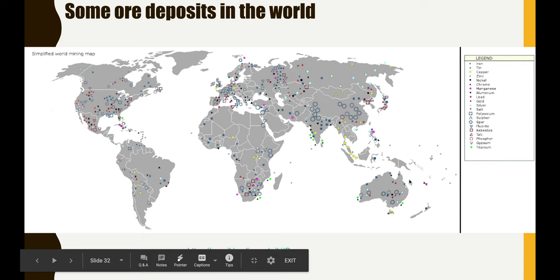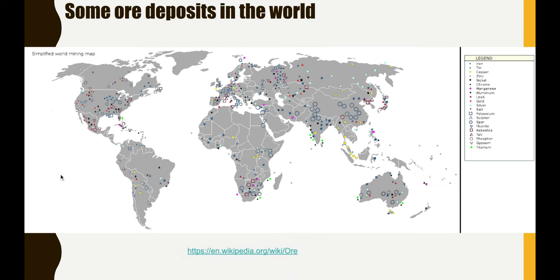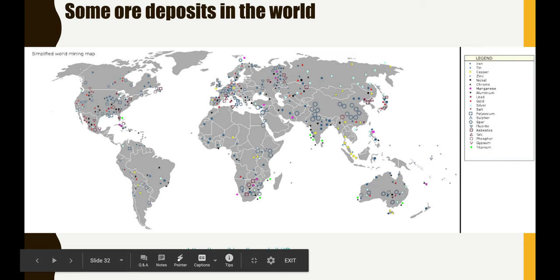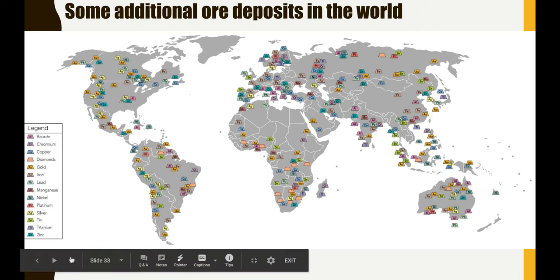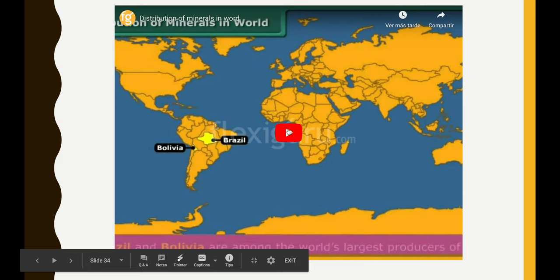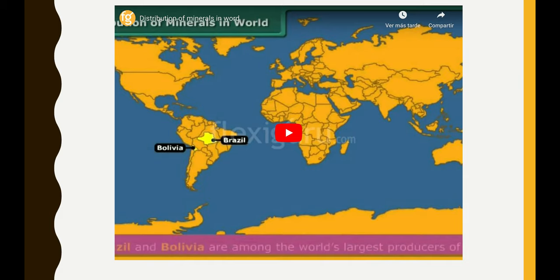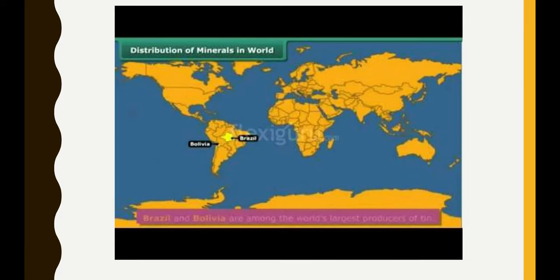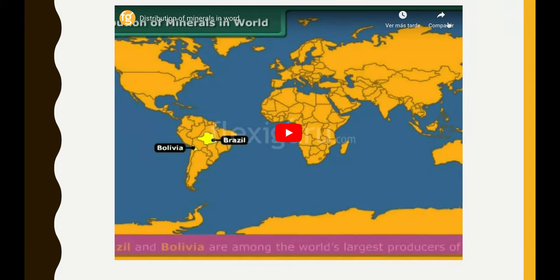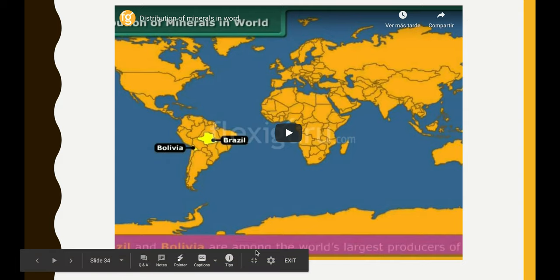Two final maps show the distribution of different ore types around the world — different regions have different ores based on their geologic history. There's also a short video on ore distribution that you should watch on your own. That wraps up today's content. Have a good one — I'll see you on Tuesday.